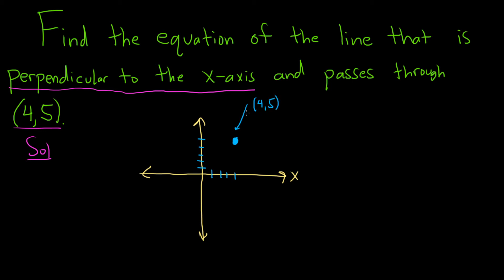Okay, now we have to carefully read the question again. It's perpendicular to the x-axis. That means that if we were to draw this line, it would have to make a 90-degree angle with the x-axis.